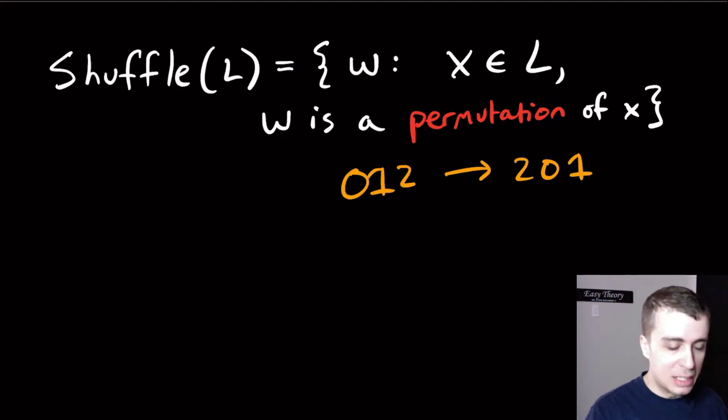What we're asking is, given any string in the language, I want to recognize every single permutation of that string and then apply that to all the strings in the language.